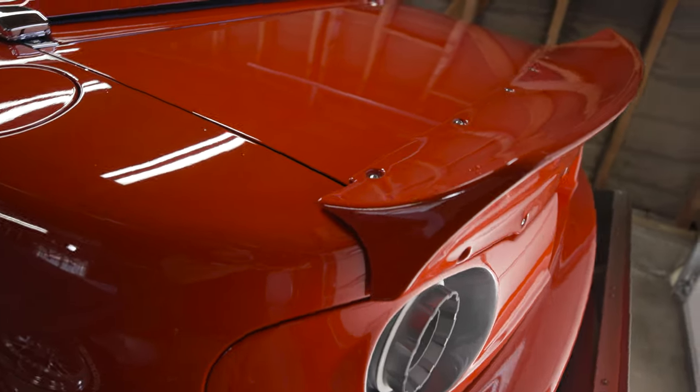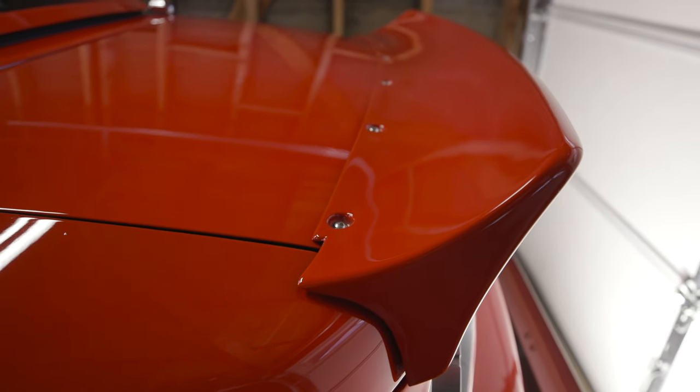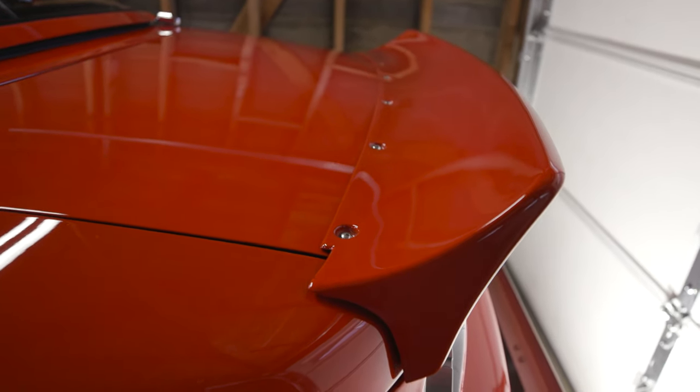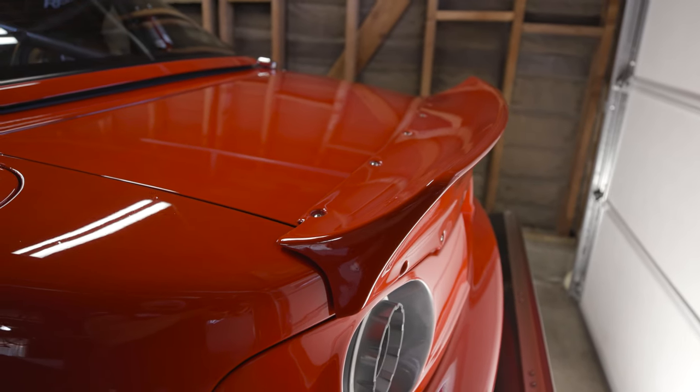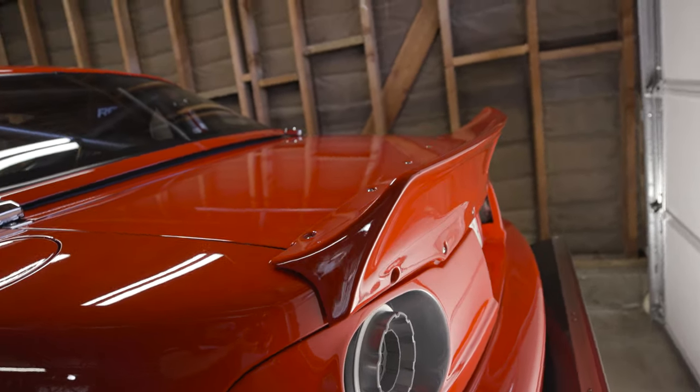Over here, my spoiler is held on by rivet nuts. Basically, I got a drill bit, I drilled holes, I inserted this piece, and then I expanded it so it just holds onto place.